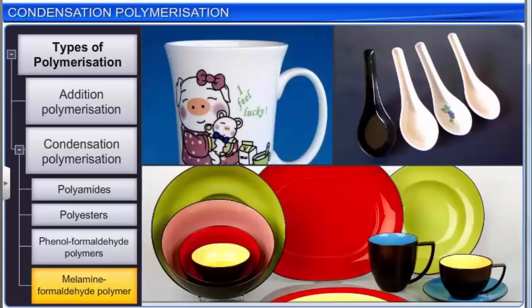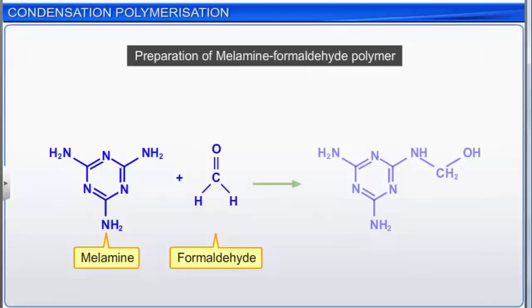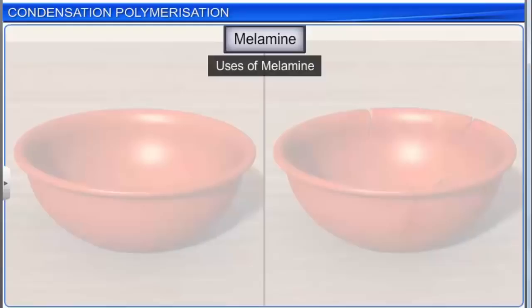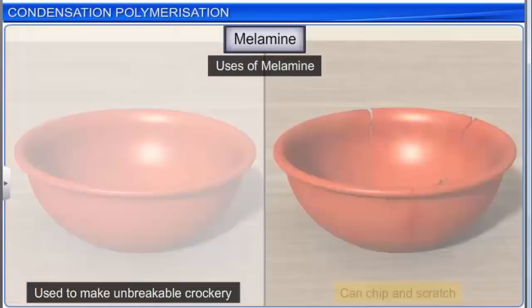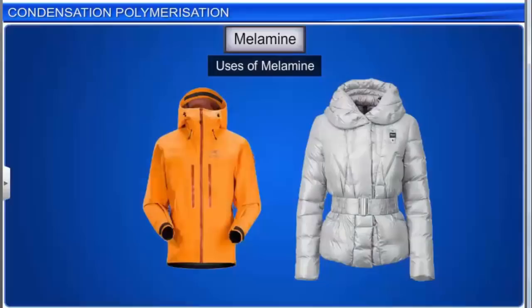Another important condensation polymer is the melamine formaldehyde polymer. The first step is the reaction between melamine and formaldehyde, which results in the formation of a resin intermediate. The resin intermediate undergoes condensation polymerization to form melamine. Melamine is used to make unbreakable crockery, though it can chip and scratch and is not microwave safe. Melamine is also used to make fireproof jackets. Note that both Bakelite and melamine are thermosetting polymers.